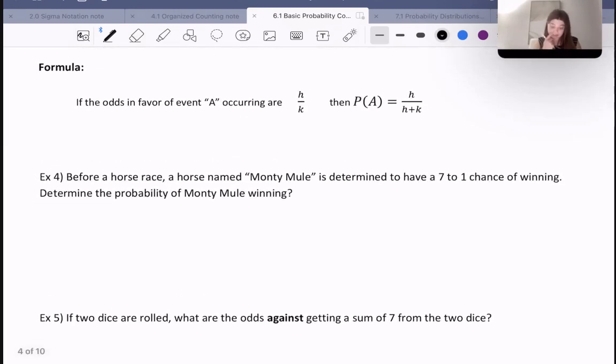There's a formula that says if the odds in favor of event A occurring are H over K, then the probability of A would be H over H plus K. Because we must add H to the bottom as well. We need to make sure that the denominator in probability is the total as opposed to just the opposite events occurring.